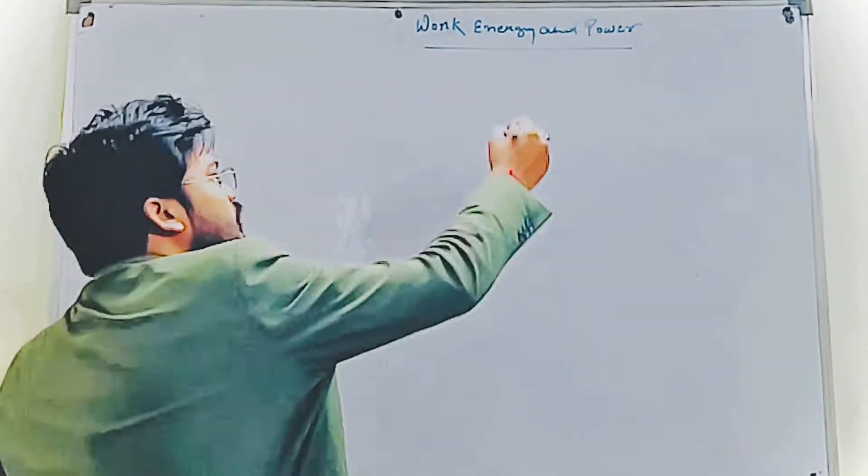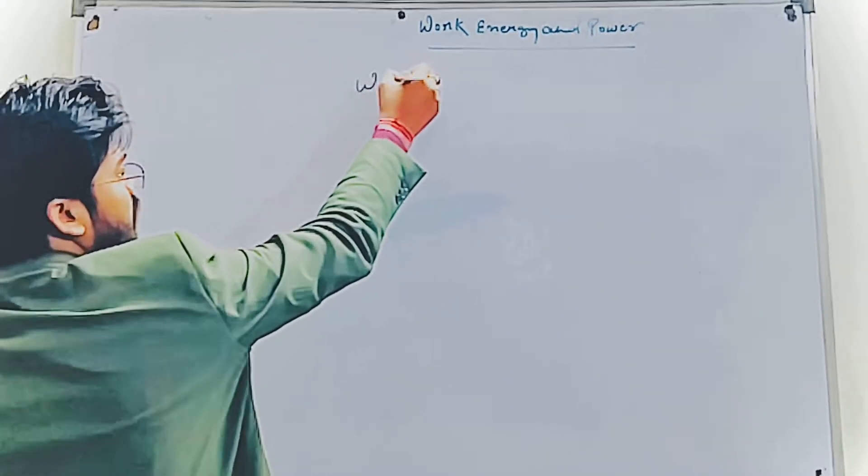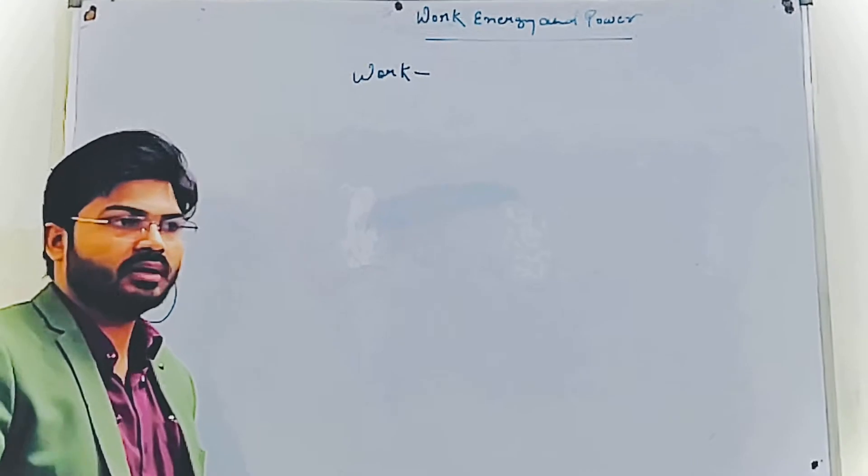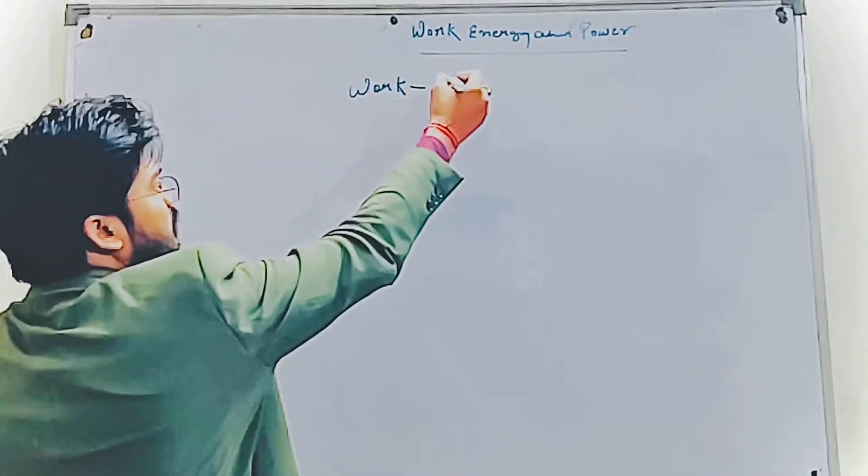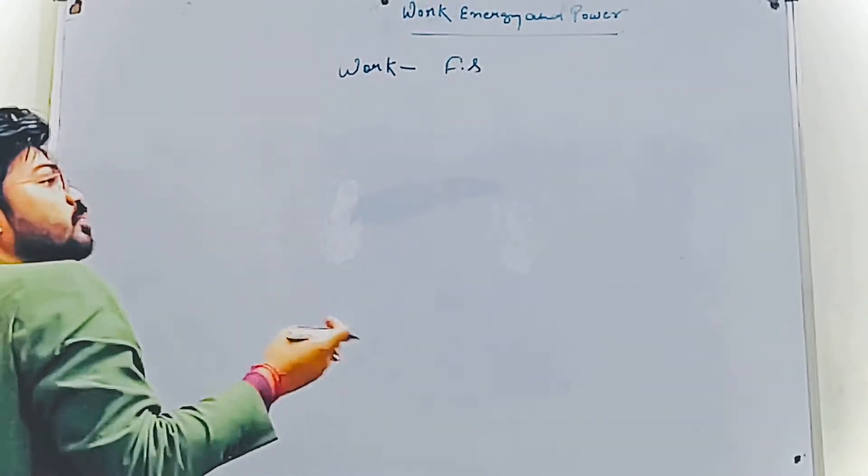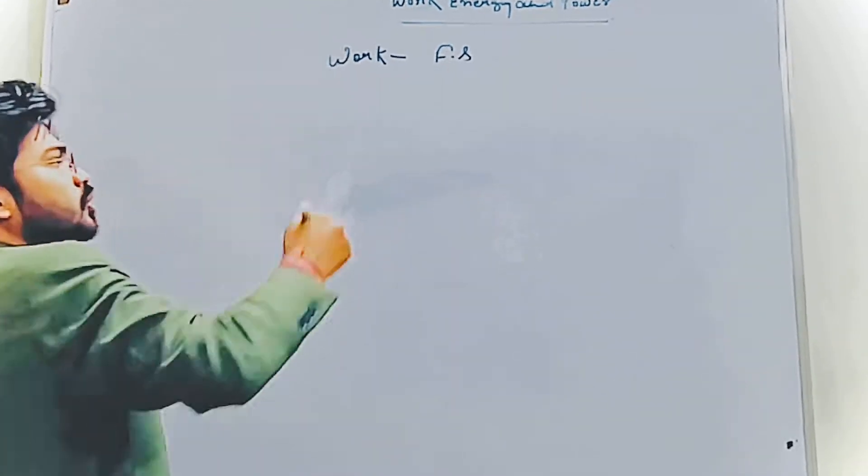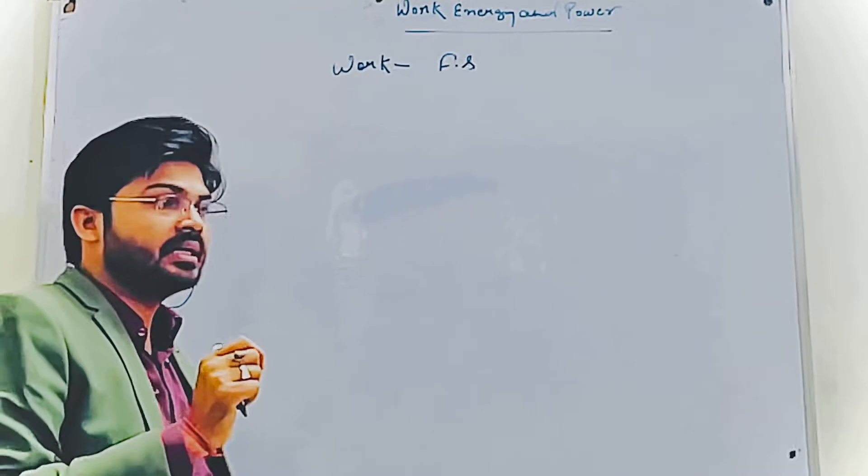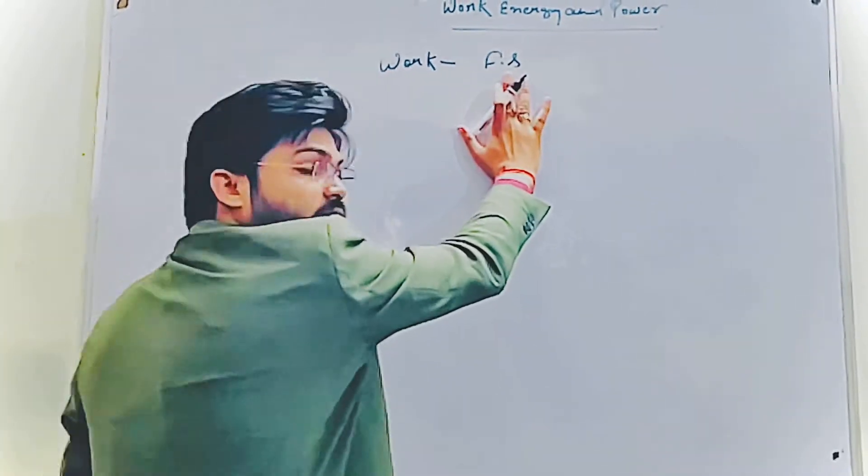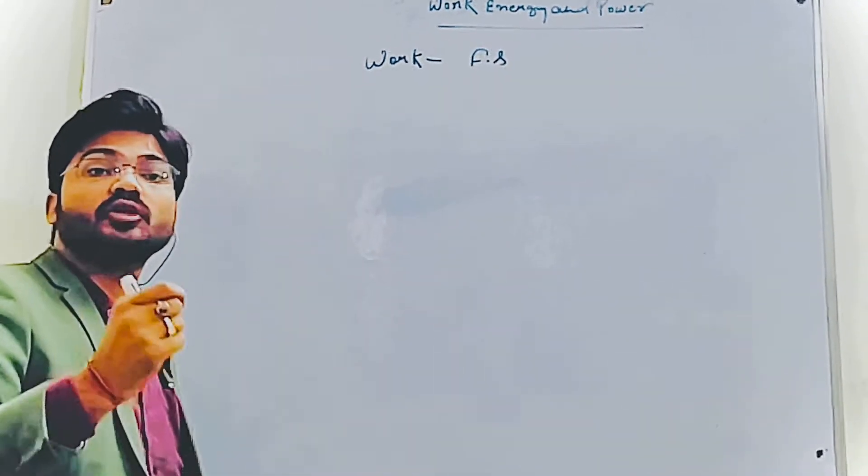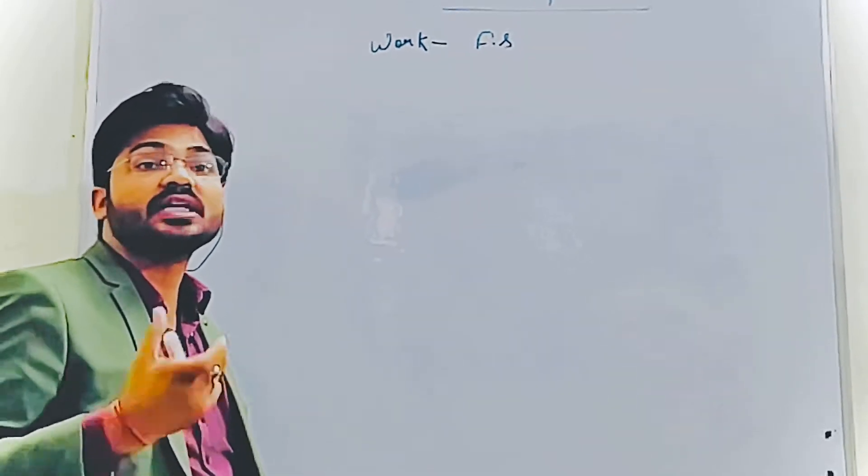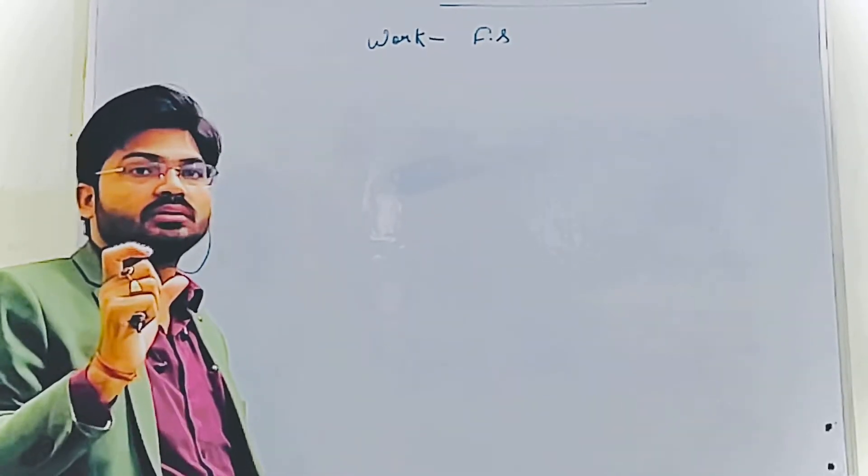Work, energy, and power. So what do you mean by work? Work basically means doing any task. W is equal to F dot S. Dot means scalar quantity, so W equals FS, meaning force in the direction of displacement. That's called work. So W equals F dot S. Work is a scalar quantity which has only magnitude, no direction.